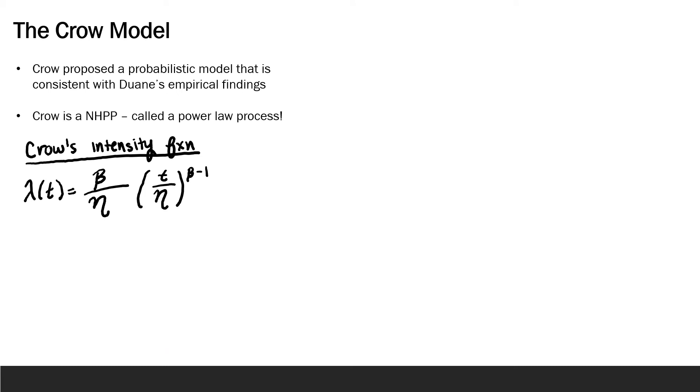So while Duane took a deterministic approach to reliability growth, Crow proposed a probabilistic model that is consistent with Duane's empirical findings. The Crow model is a non-homogeneous process, also called the power law process. So recall that in the last module we defined the intensity function, λ(t), associated with NHPP. The intensity function for Crow's model is this expression here. Now, when we look specifically at the intensity function for Crow's model, we see that the intensity function has two parameters, η and β.